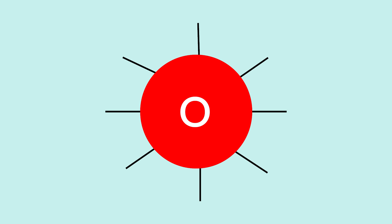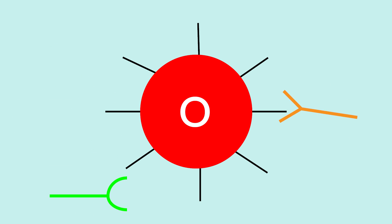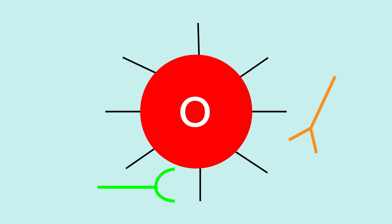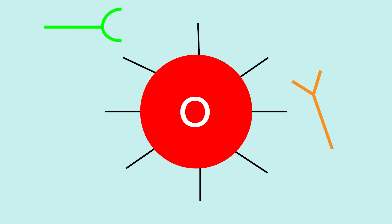Lastly, there's the very unique O blood cell type. This blood cell has neither A nor B antigens present on the outside surface of the cell. This means that there is nothing for the A and B antibodies to bind to, so they live freely in the plasma and do not cause any cell death.